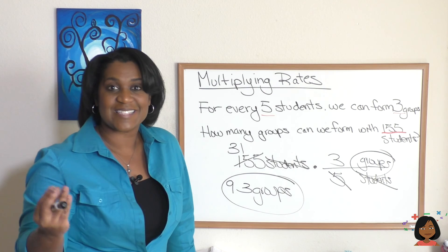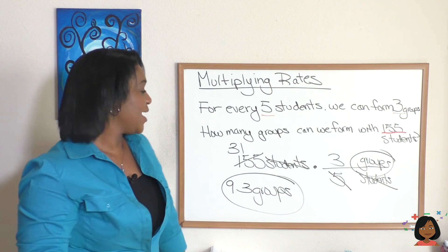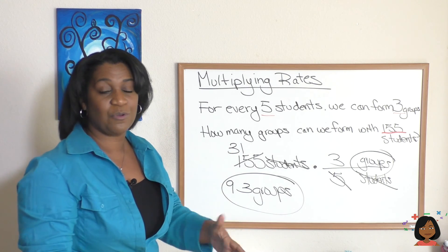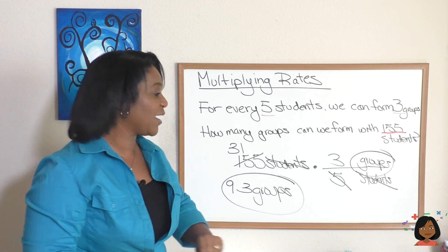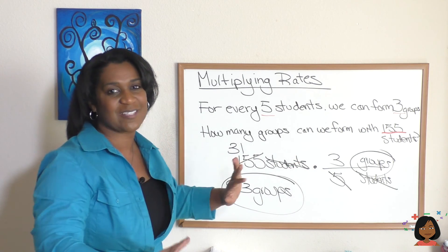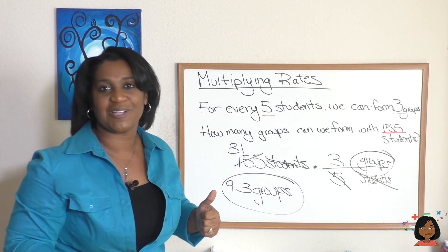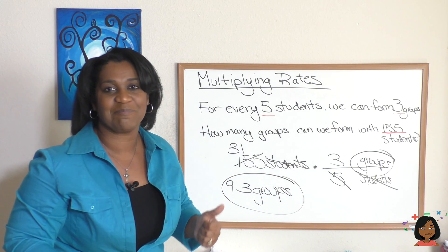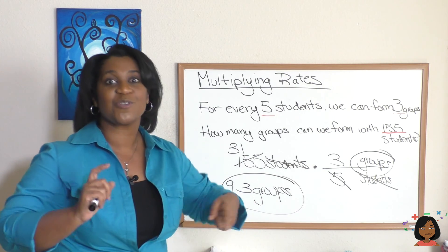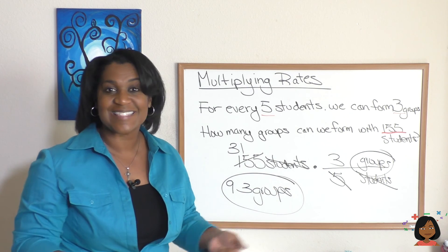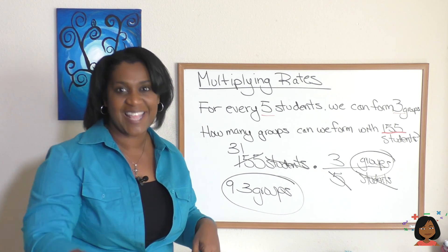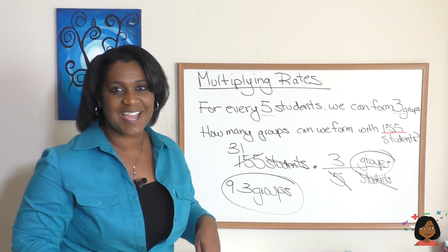And that's it — it's that simple! As long as you start with the information given, multiply it times the rate in the correct order so you can cross out the label, you're going to get it right every time. Make sure you try the practice problems. It's Nicole the Math Lady — I hope you're having a great day, and I'll see you next time. Bye!